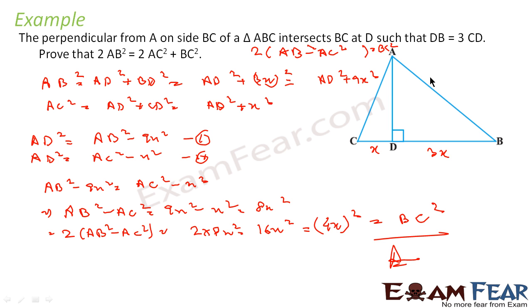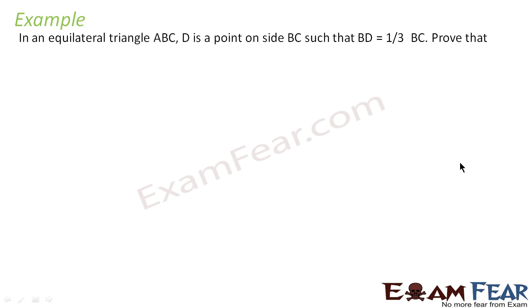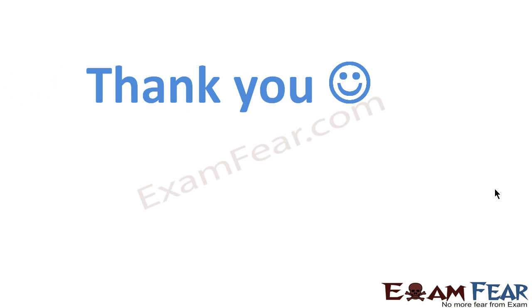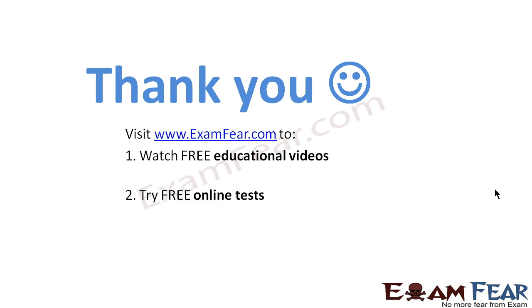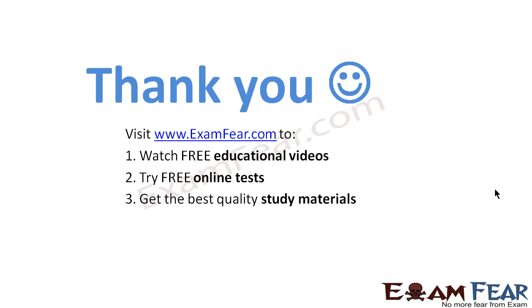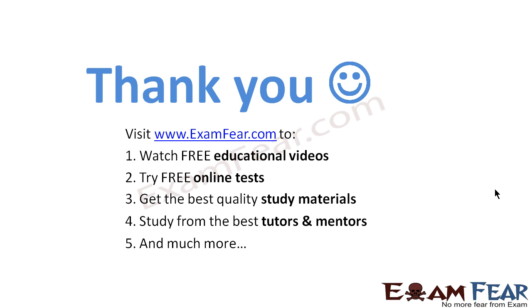Just try to find AB and AC in terms of AD and the given sides using Pythagoras theorem and you'll get the answer. In an equilateral triangle ABC, D is a point on BC such that BD = (1/3)BC; we have to prove that 9AD² = 7AB². Visit examfear.com to watch free educational videos, try free online tests, get the best quality study materials, and study from the best tutors and mentors. Thanks once again.